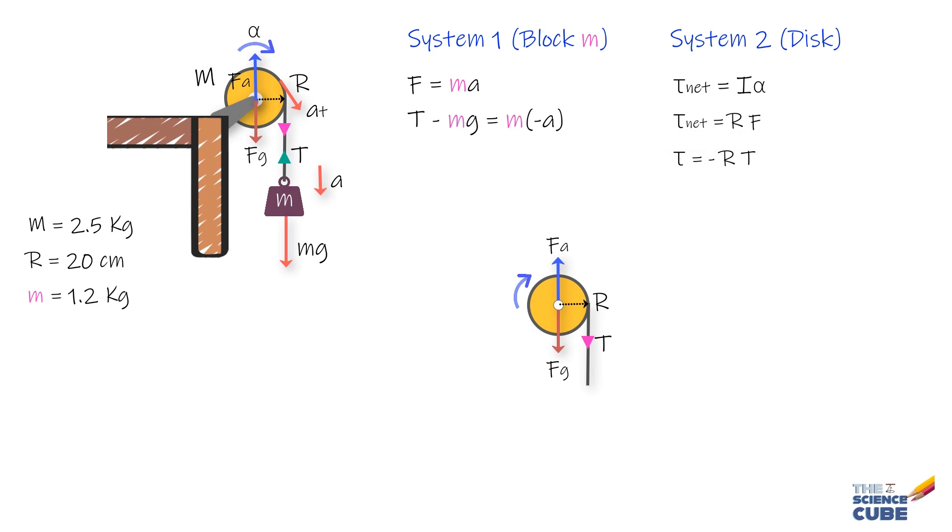Now let us assume alpha to be the magnitude of this negative angular acceleration. We also know the rotational inertia I of the disc is half mr square. Then